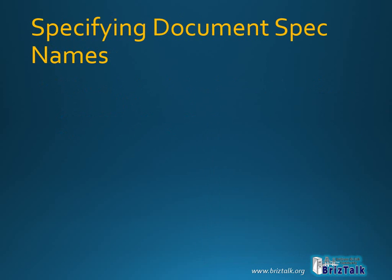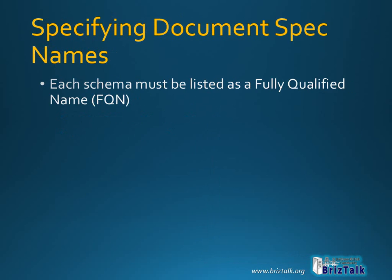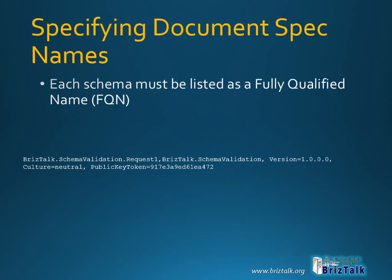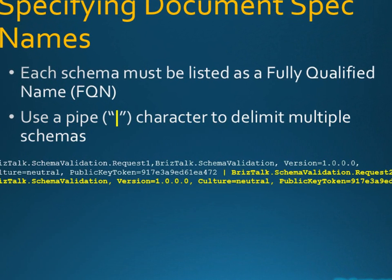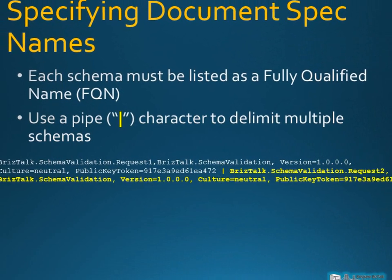Getting the fully qualified name specification correct is a bit tricky, and if you get it wrong you'll just get runtime errors with every message submitted. A sample fully qualified name is shown here. As you can see, it is made up of the .NET name of the schema, followed by the name of the assembly. A comma separates these two items. If you need to specify multiple schemas, use a pipe character to delimit them. The spaces around the pipe character are optional.